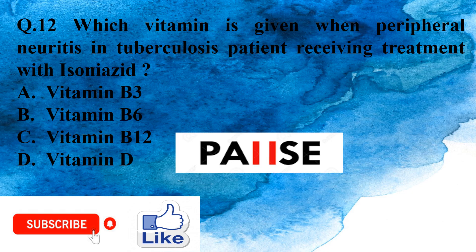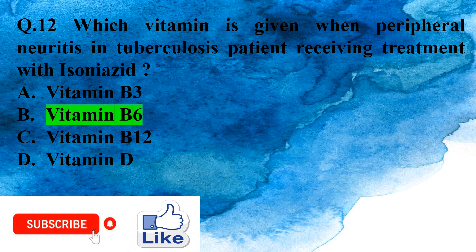Question 12: Which vitamin is given when peripheral neuritis occurs in a tuberculosis patient receiving treatment with isoniazid? Option A: Vitamin B3, Option B: Vitamin B6, Option C: Vitamin B12, Option D: Vitamin D. The right answer is Option B, Vitamin B6.